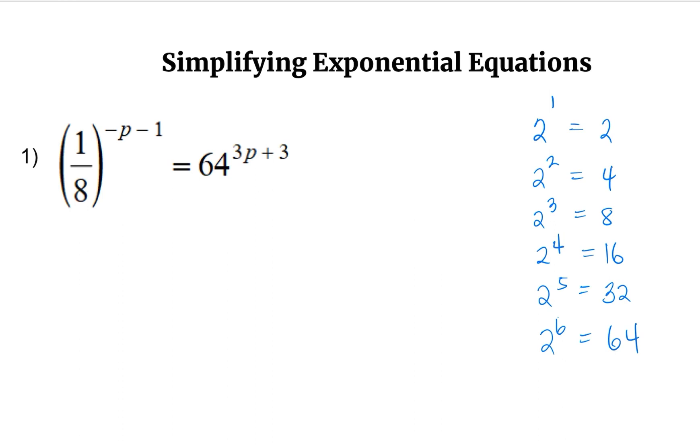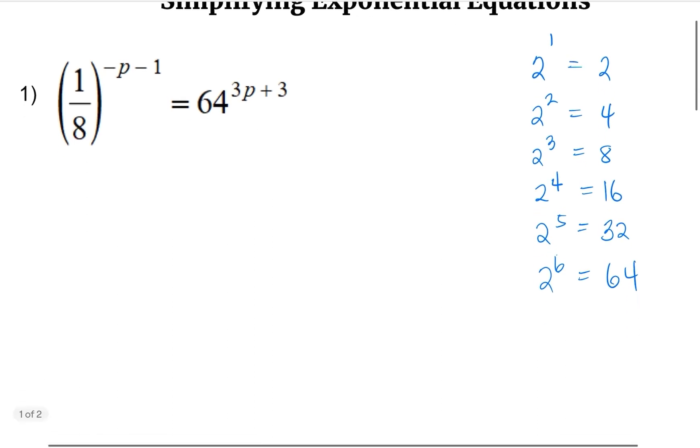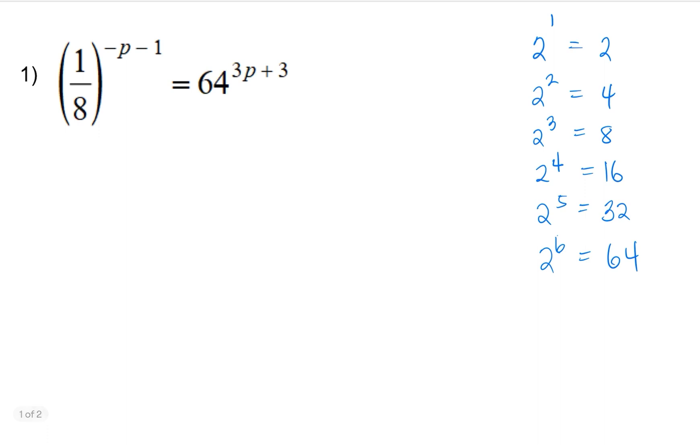So we can make the base be the same by using base 2. So let's rewrite 1/8 into base, the denominator, which is 8 into base 2. So that would be 1 over 2 to the power 3. 2 to the power 3 is equal to 8. So 2 times 2 times 2 equals 8. So we're going to keep this as a fraction and keep the exponent negative p minus 1.